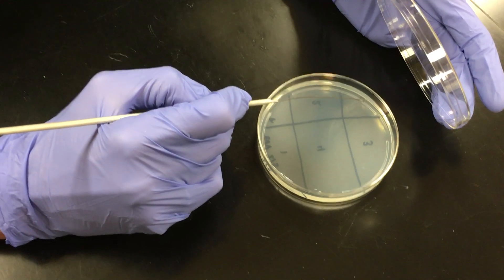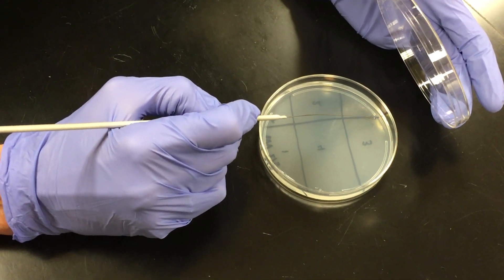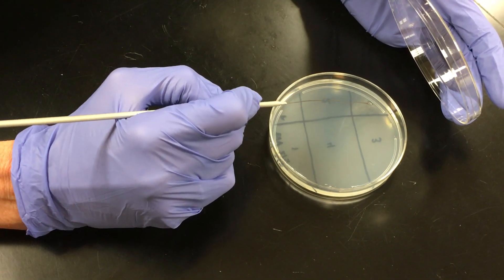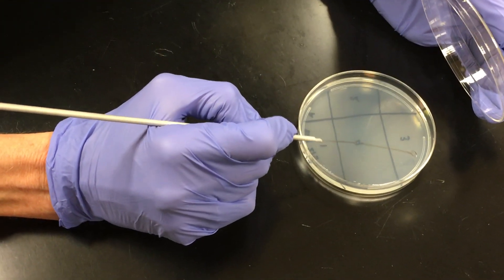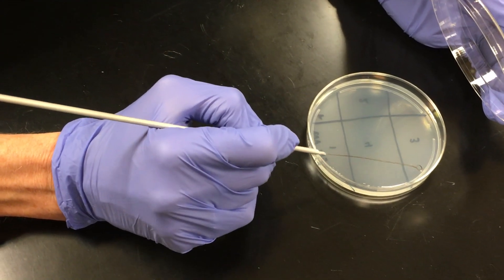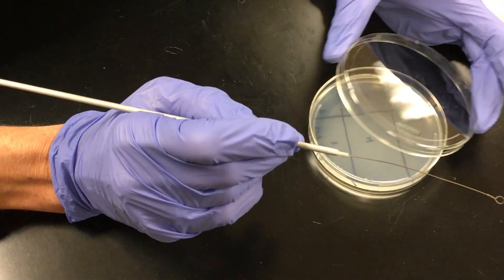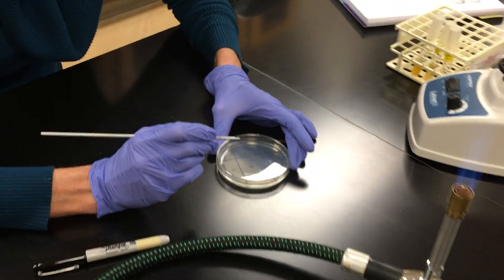And so I'm going to do that again, five times. So I'm starting, I'm taking some bacteria from this quadrant two, I'm streaking them into three, one, two, three, four, five times. And then I'm going to stop and I'm going to close my lid.